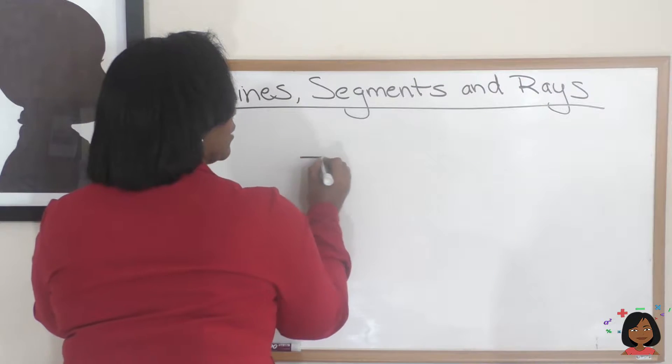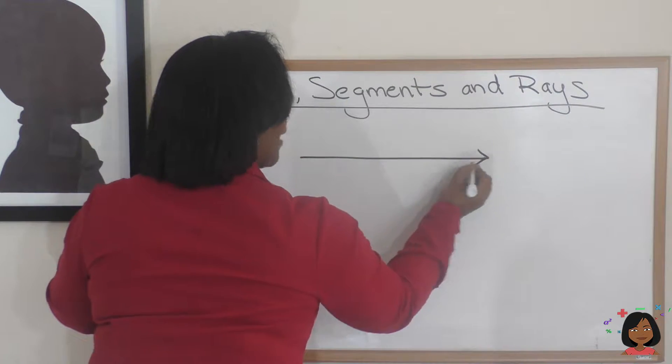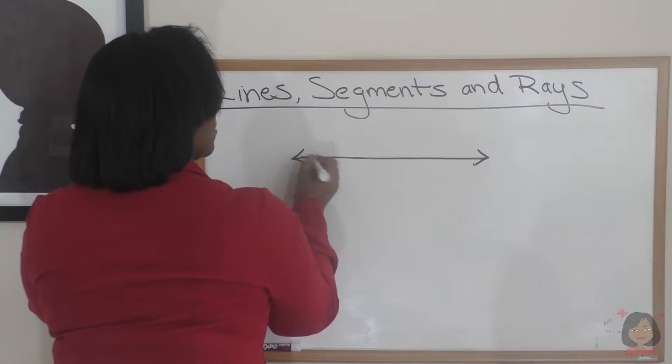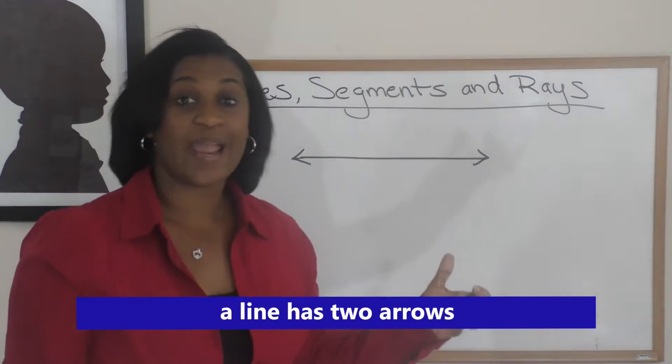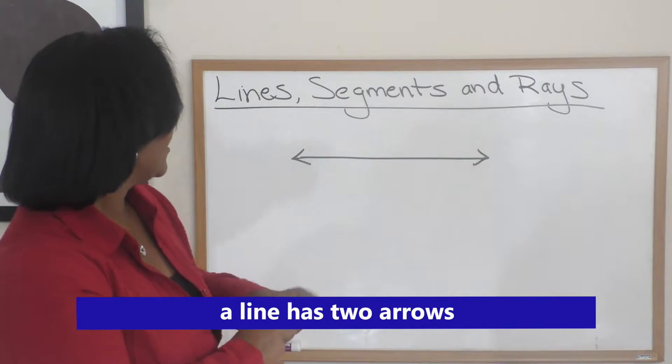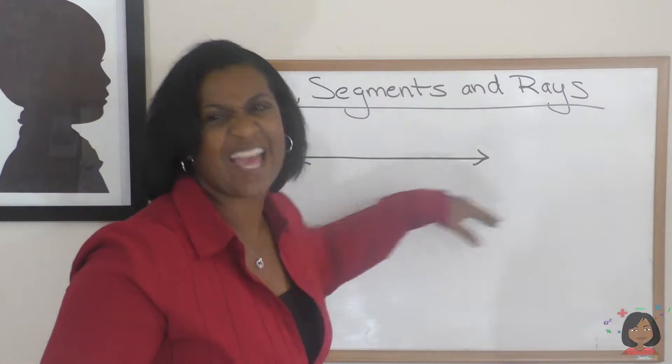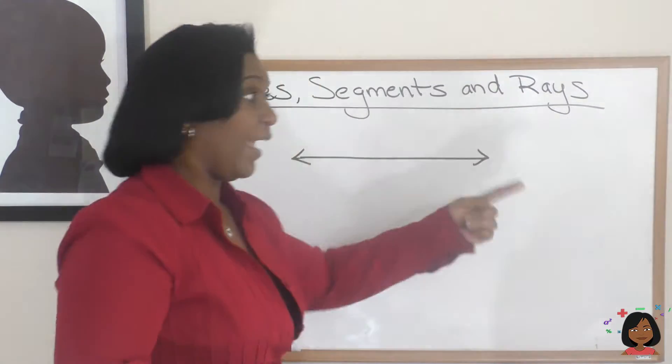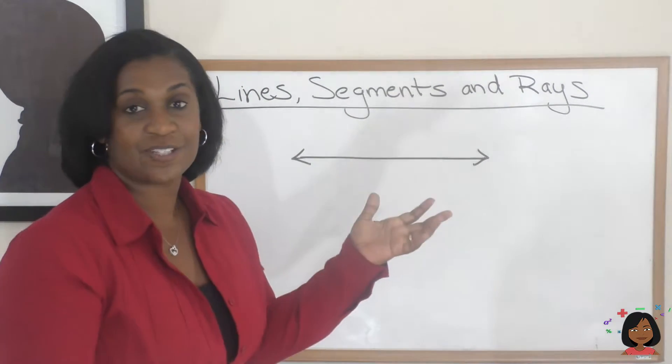I'm going to draw a line here. One thing you need to know about a line is that you usually see a line with two arrows, one on either side, and it means that this line goes indefinitely in that direction, and it goes indefinitely in that direction.